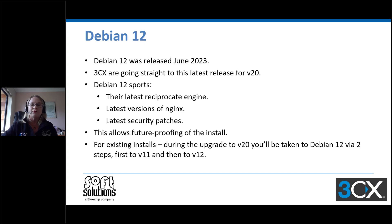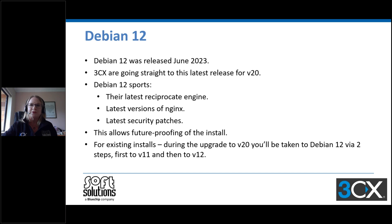Debian 12, which was just released in June 2023, is where 3CX are going straight to for version 20. It's got the latest reciprocate engine, latest versions of NGINX and the latest security patches — they're not mucking around, they're just going straight to the latest one. It also means future-proofing the install. For existing installs, during the upgrade to version 20 it will be a two-step process: you'll be taken up to version 11 and then to version 12, so it won't take long but it will be a two-step process.